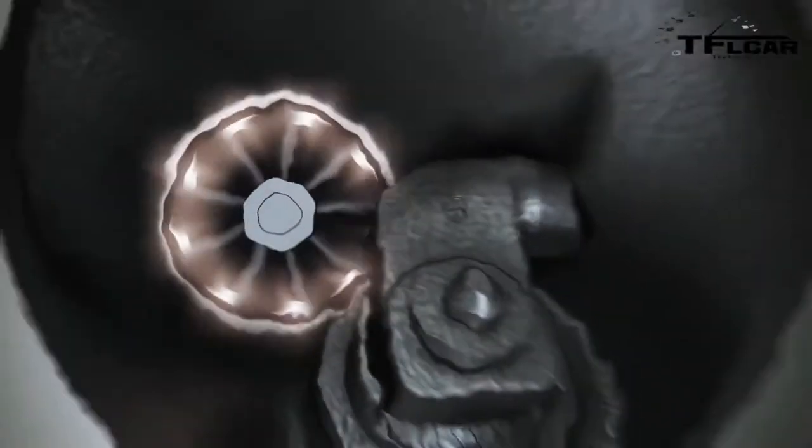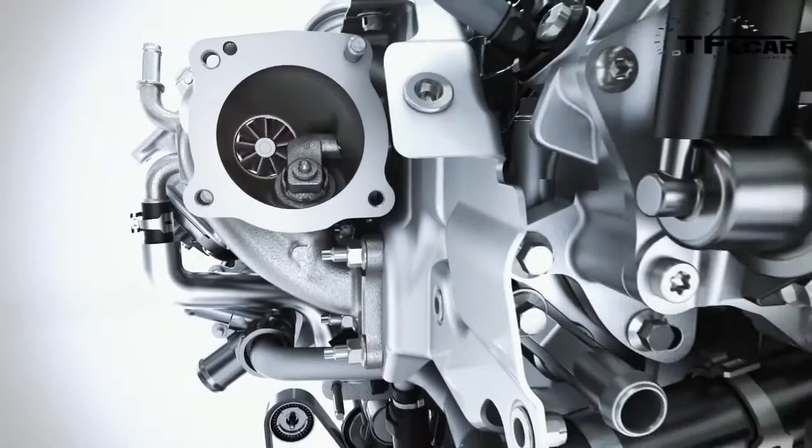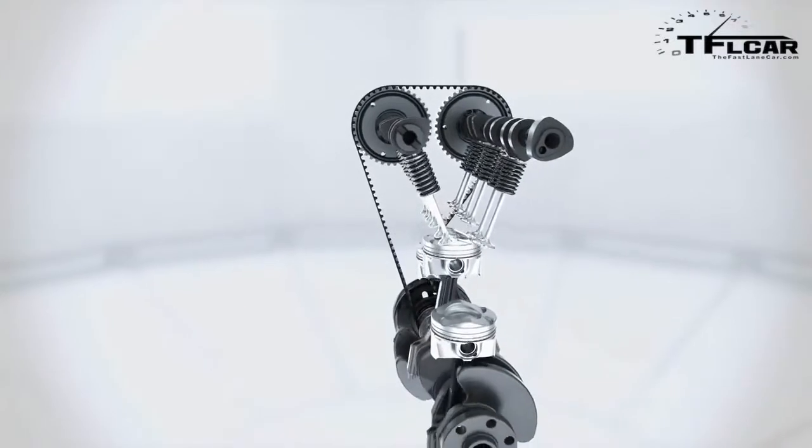So, in America, this engine gets, on the highway, 45 MPG. That's right, yeah. In Europe, the numbers are different, right? It's how many liters of fuel you use per 100 miles. 100 kilometers. Yes. So what's it rated in Europe? I can't recall that off the top of my head.